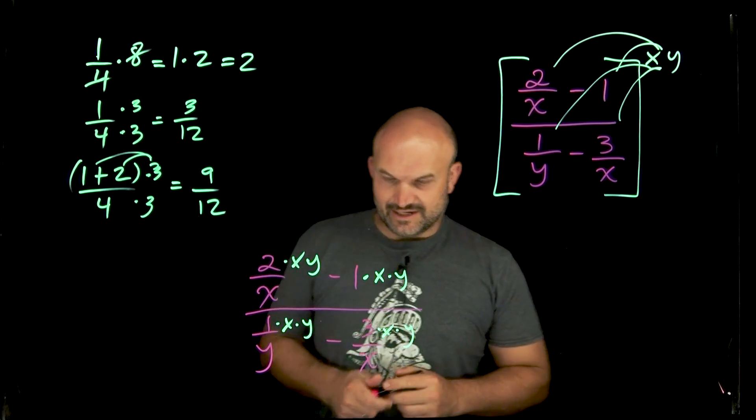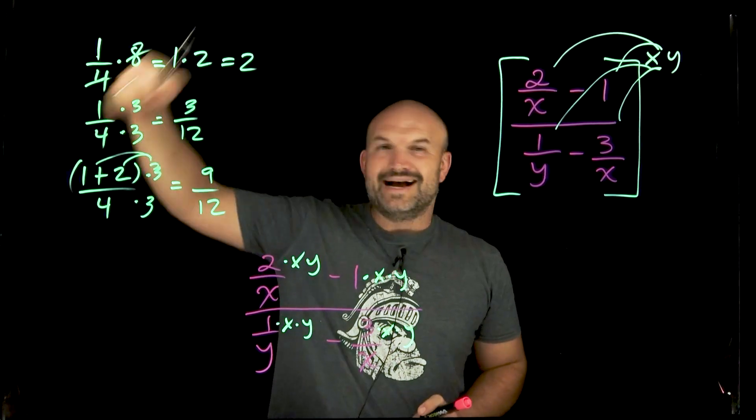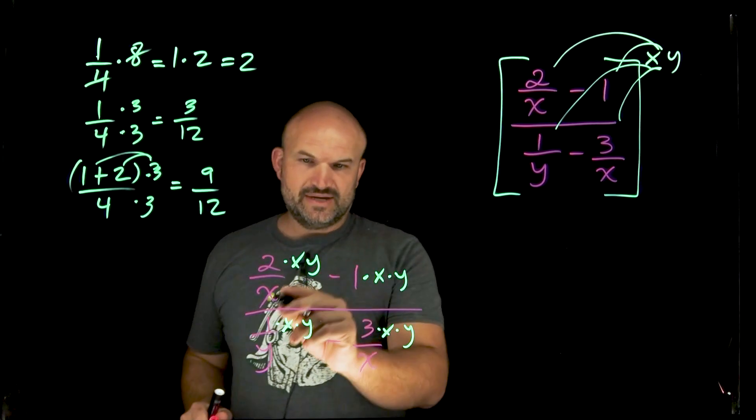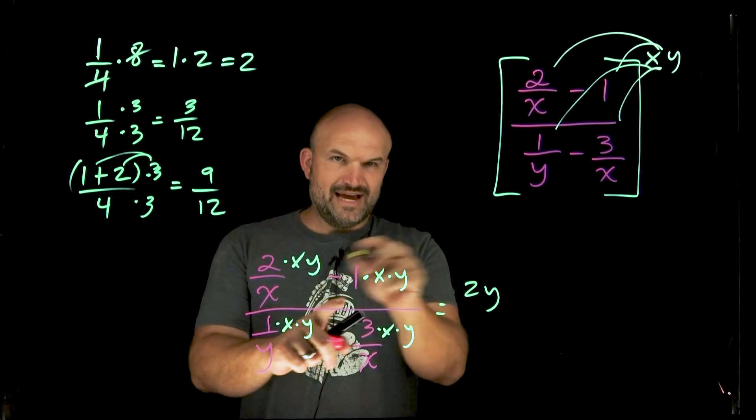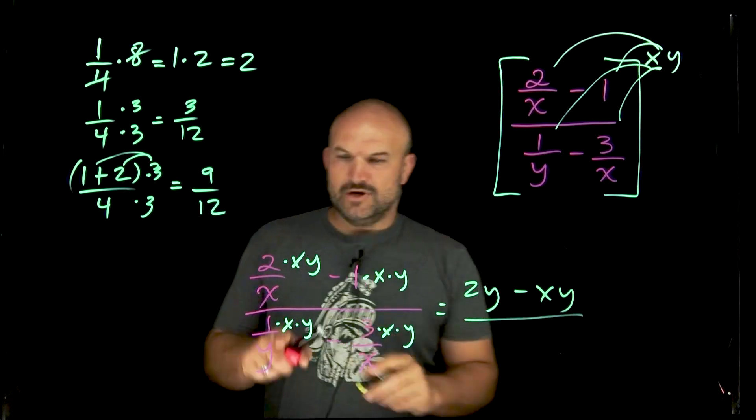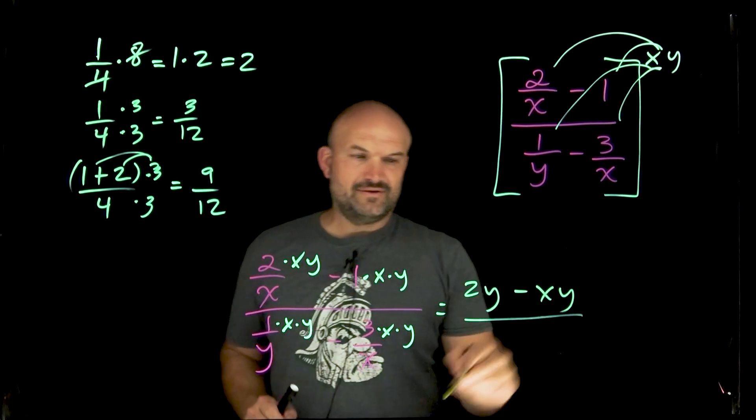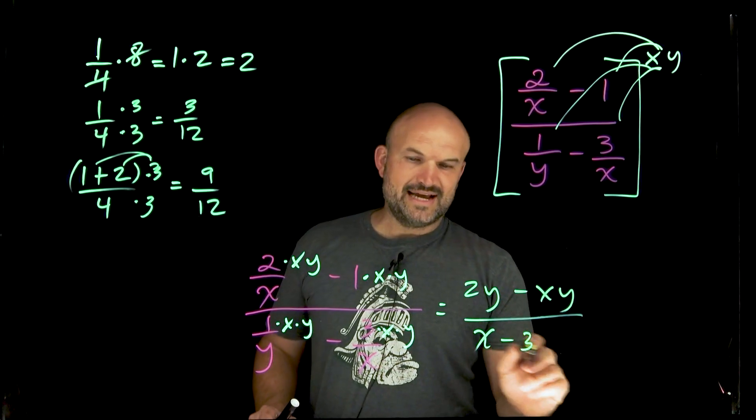So now what I want you to see here is since I have the x, since I have terms now in the numerator and the denominator, I know things are going to divide out. So here, my x's will divide out, that's just going to leave me with 2y. Here, I don't really have even a denominator here, that's just going to leave me with negative xy. Over here, my y's are going to divide out, that's just going to leave me with x. And here, my x will divide out leaving me with negative 3y.